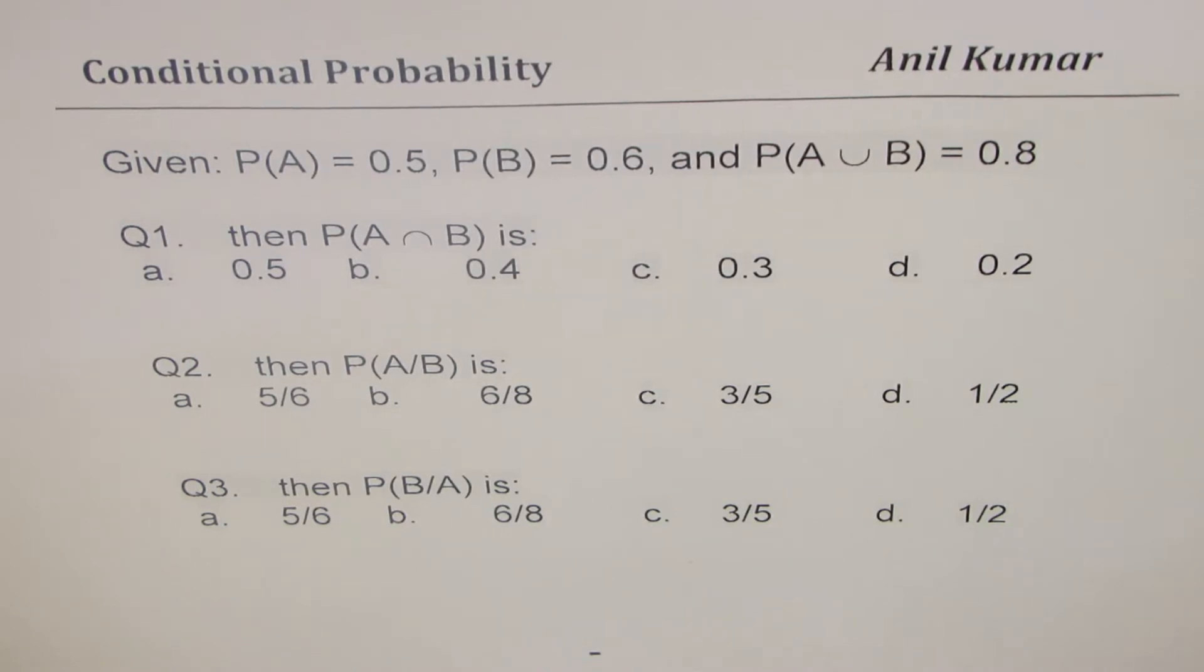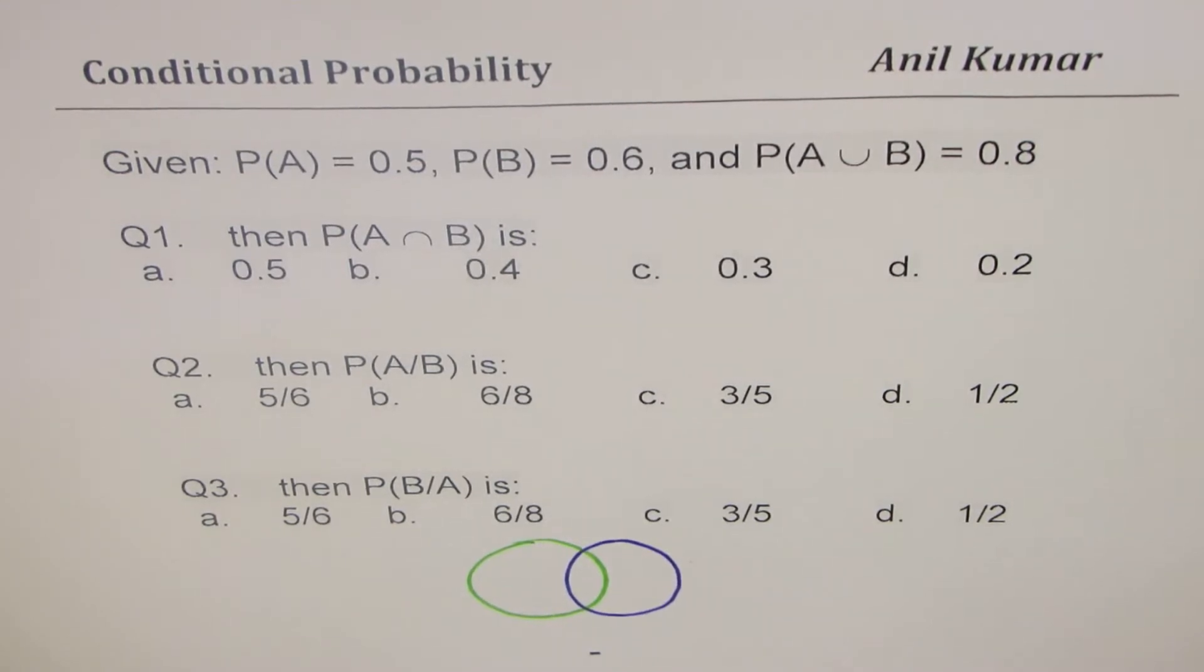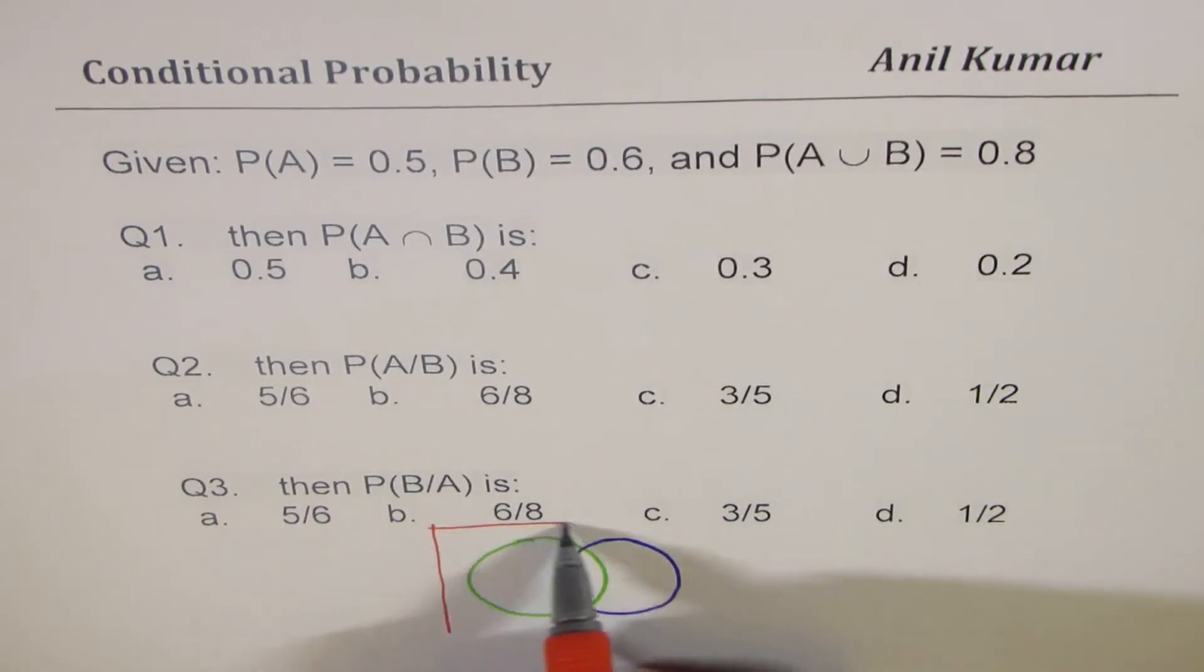So let's try to understand the concept also while we answer. So we have two events A and B, so let me use these two circles for the two events A and B. Let's say this is event A and the other event is event B. So these are the two events in our sample space. Let me show the sample space as something like this with the help of this Venn diagram.